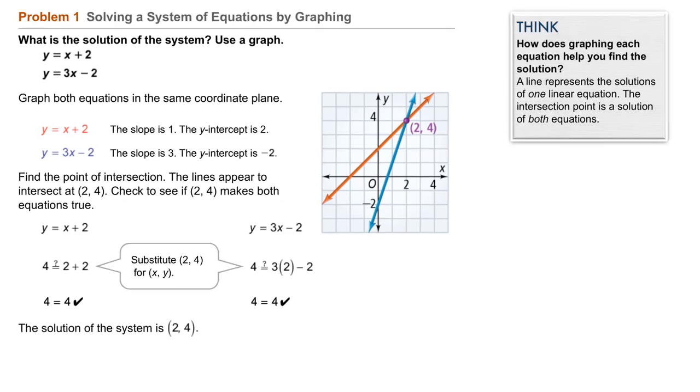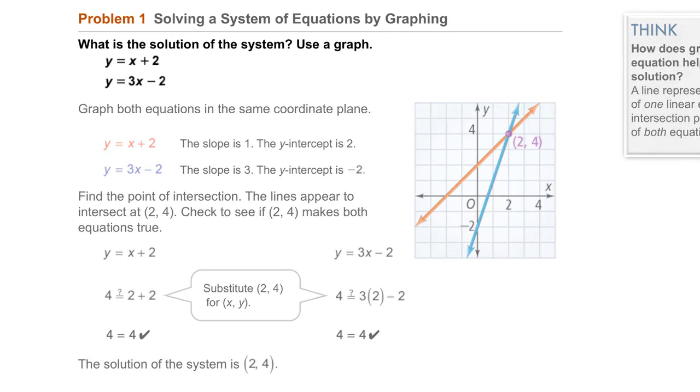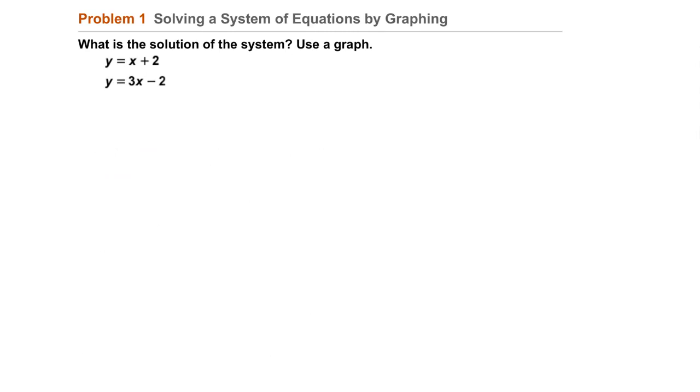Problem 1: solving a system of equations by graphing. What is the solution of the system? Use a graph. Here we're given two equations, both in slope-intercept form, which will make the graphing easier for us. The first is y equals x plus 2, the second, y equals 3x minus 2.